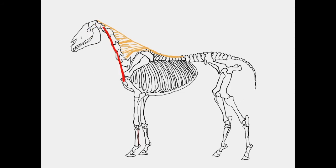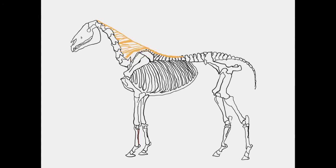Cleidocephalicus is the dorsal aspect and the ventral aspect is the cleidobrachialis. They fuse together at the clavicular intersection. Nearby we have homotransversarius. Then we have our trapezius muscle, rhomboideus, and latissimus dorsi. Serratus ventralis — notice the light red indicating that the muscle is actually attaching to the medial aspect of the scapula.